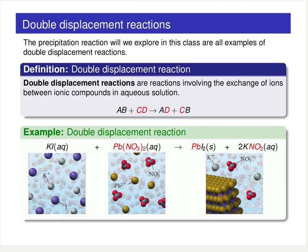To look at a chemical example, let's consider the reaction of an aqueous potassium iodide solution with an aqueous lead nitrate solution, and consider what happens when you mix these two aqueous solutions together. Before mixing, the aqueous potassium iodide solution consists of dissolved potassium and iodide ions floating around.